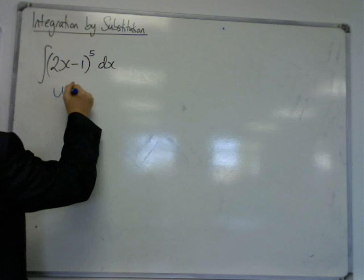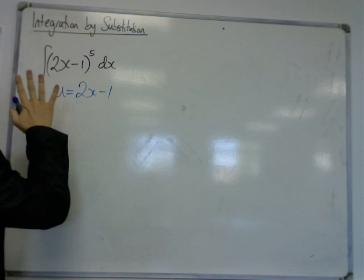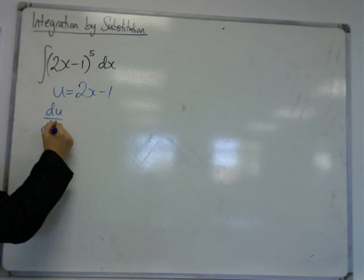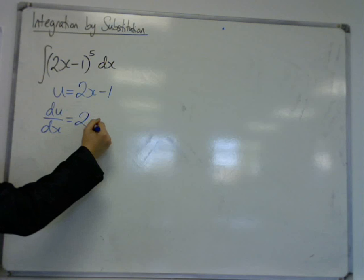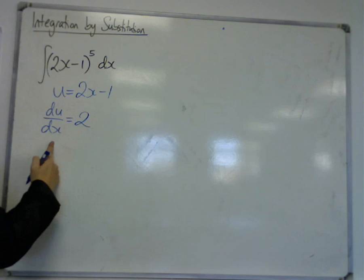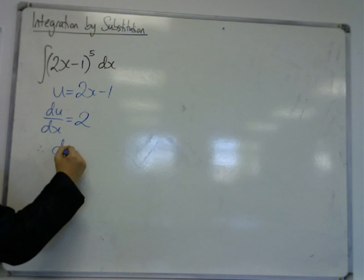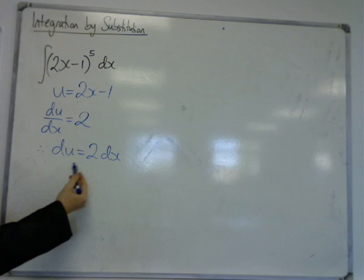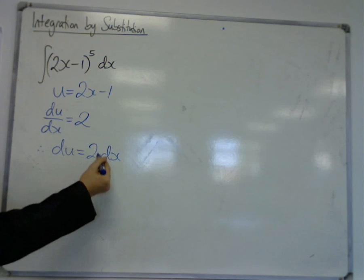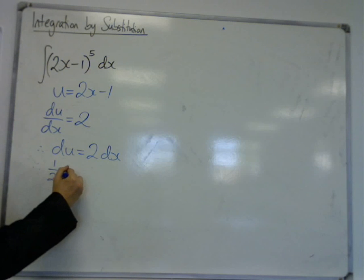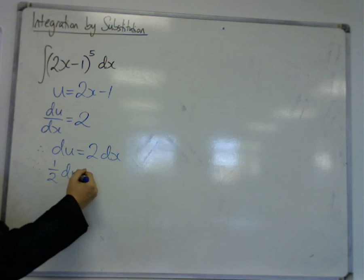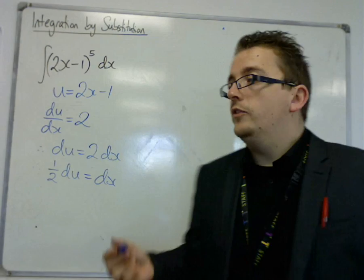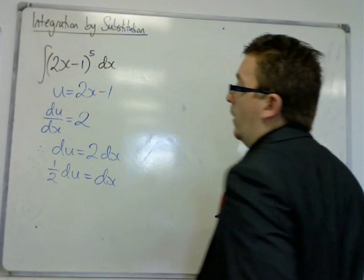So u this time is going to be 2x-1. So we differentiate this because we need to get a replacement for dx. So in this case, du/dx is 2. Multiply both sides by dx. We notice we haven't got a straightforward conversion here. So if I half both sides, or divide both sides by 2, I get this. So dx can be replaced with 1/2 du.